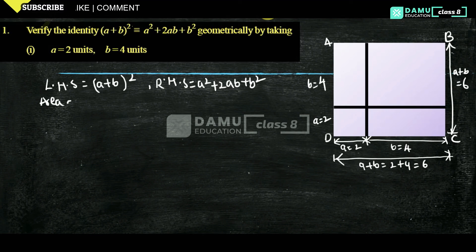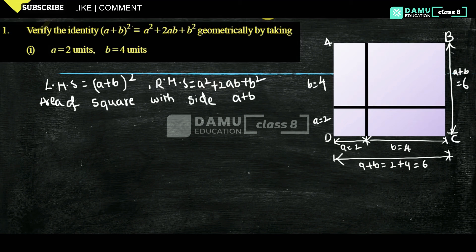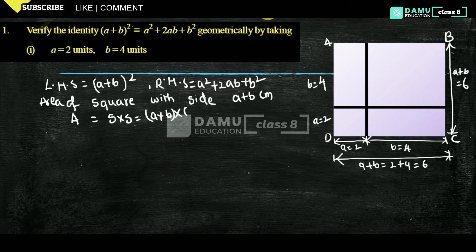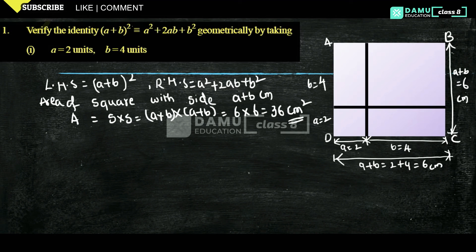Area of the square with side a plus b centimetres. Area of square is side into side, that will be (a + b) into (a + b), that is 6 into 6, equal to 36 centimetre square. All measurements are in centimetres. Therefore, LHS — (a + b) whole square — will be equal to 36 centimetre square.